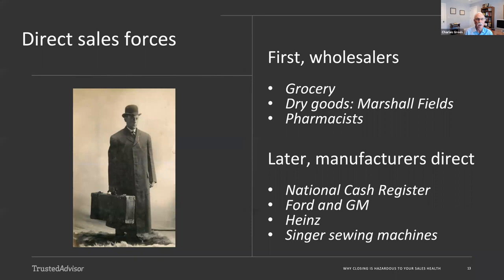Later on in the early 20th century, we see direct sales forces, professional sales forces, first in the wholesale area like groceries. Marshall Fields, a name that most of you probably remember or know, became very big in this era. The pharmacy industry was big, local drug stores popped up all around the country. And then later on we saw the advent of manufactured direct sales forces. National Cash Register, NCR was a leader in the development of sales forces. Also Ford and General Motors, Heinz was very big. Singer sewing machines, which actually began in Europe, became very big as well.